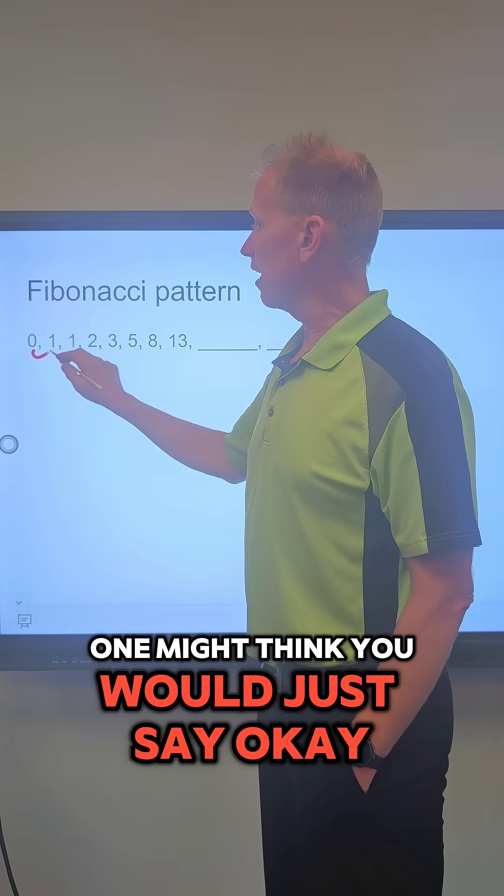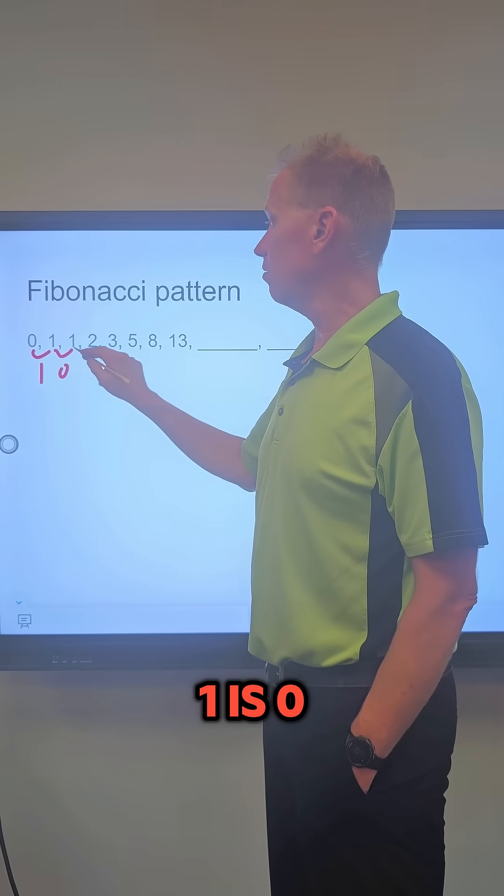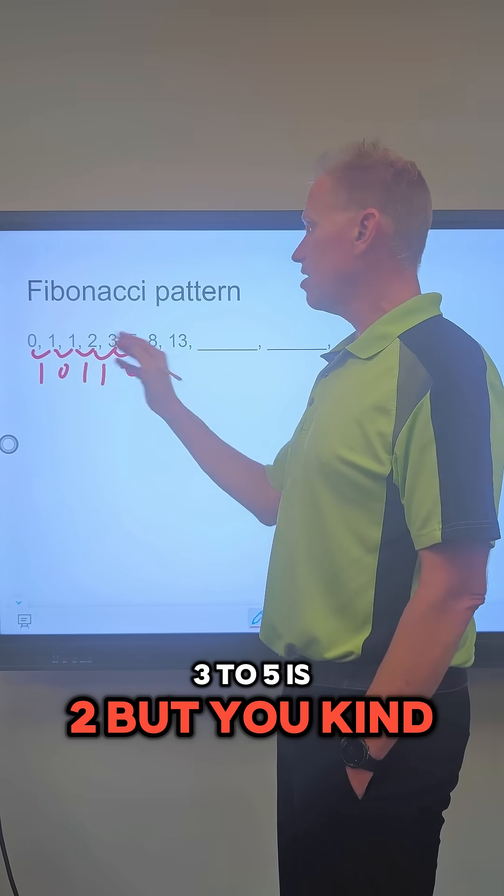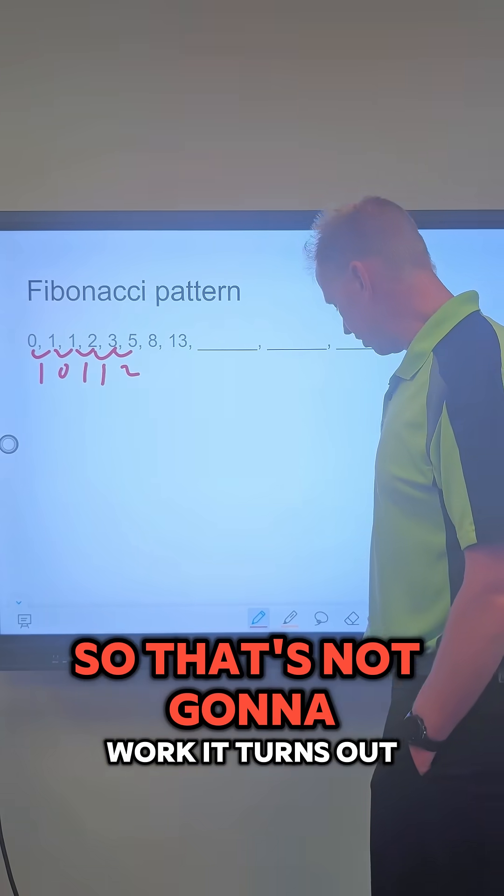One might think you would just say, 0 to 1 is 1, 1 to 1 is 0, 1 to 2 is 1, 2 to 3 is 1, 3 to 5 is 2, but you start seeing there's not a pattern there. That's not going to work.